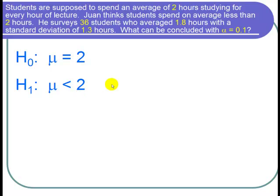So now let's write down the cast of characters. The average for the sample was 1.8 hours. So X bar equals 1.8. The standard deviation for this sample of 36 students was 1.3 hours. So the sample standard deviation S is 1.3. There were 36 students surveyed. So that's the sample size, N equals 36.